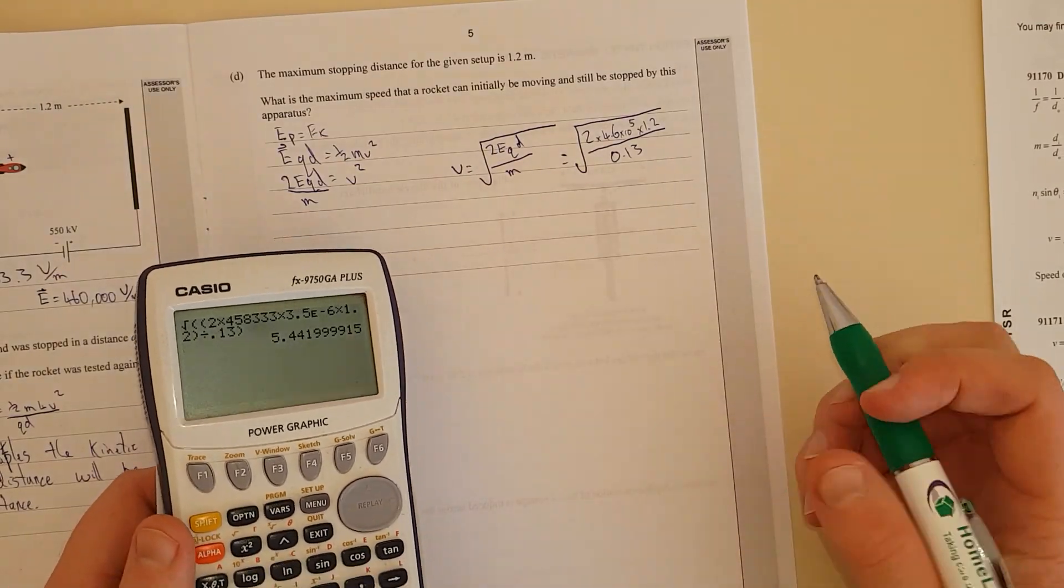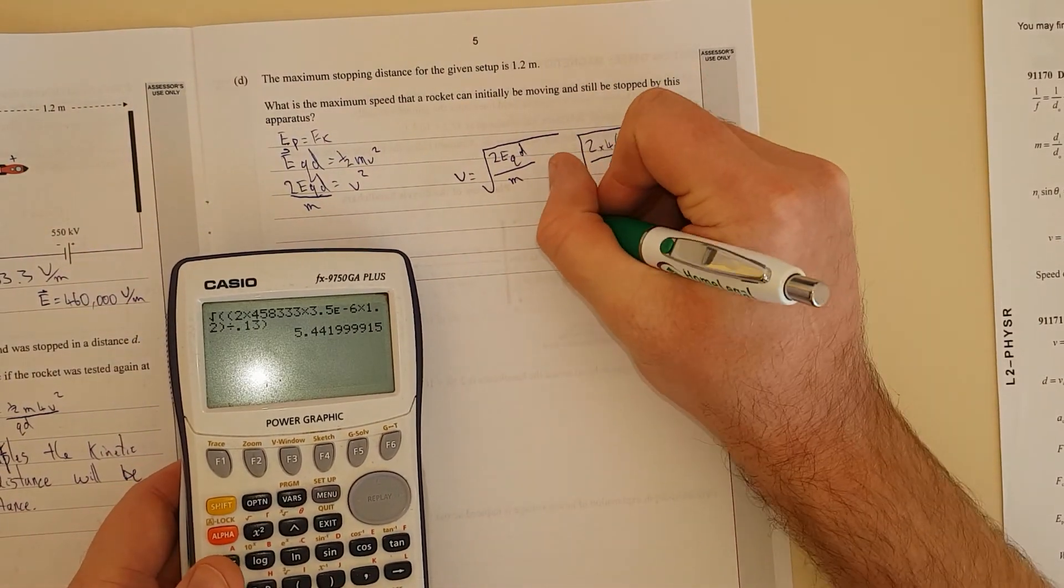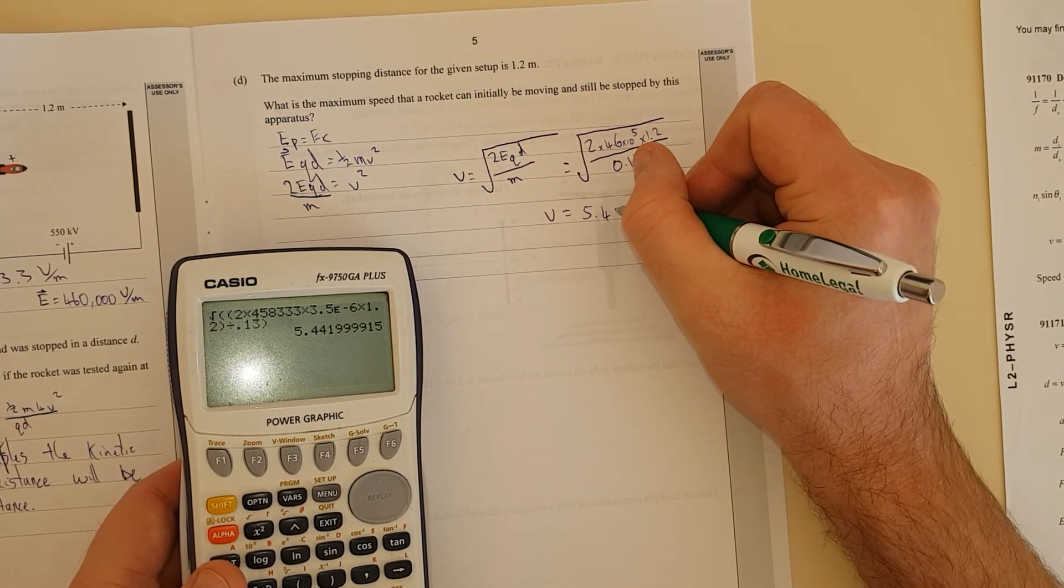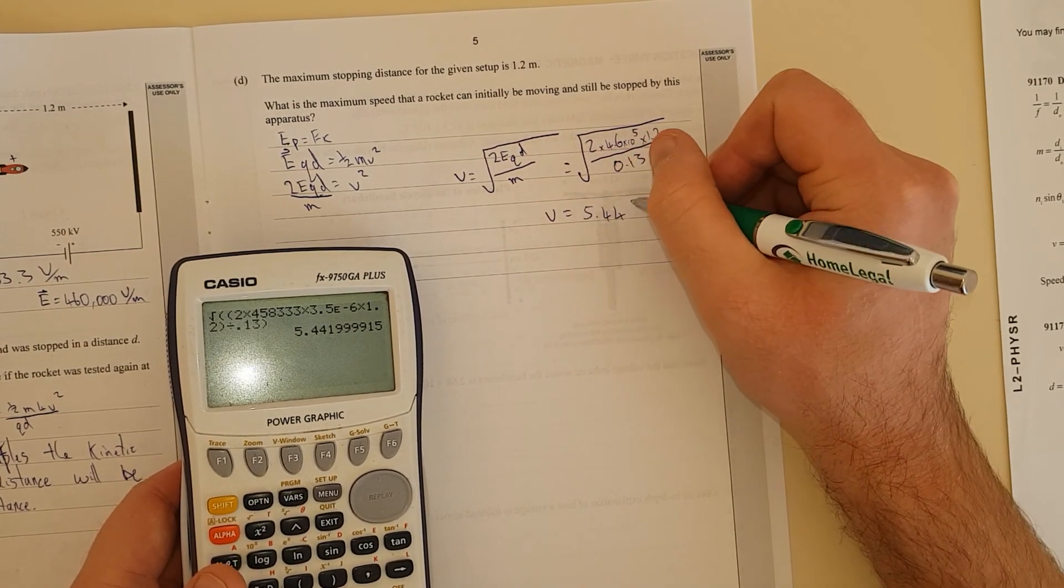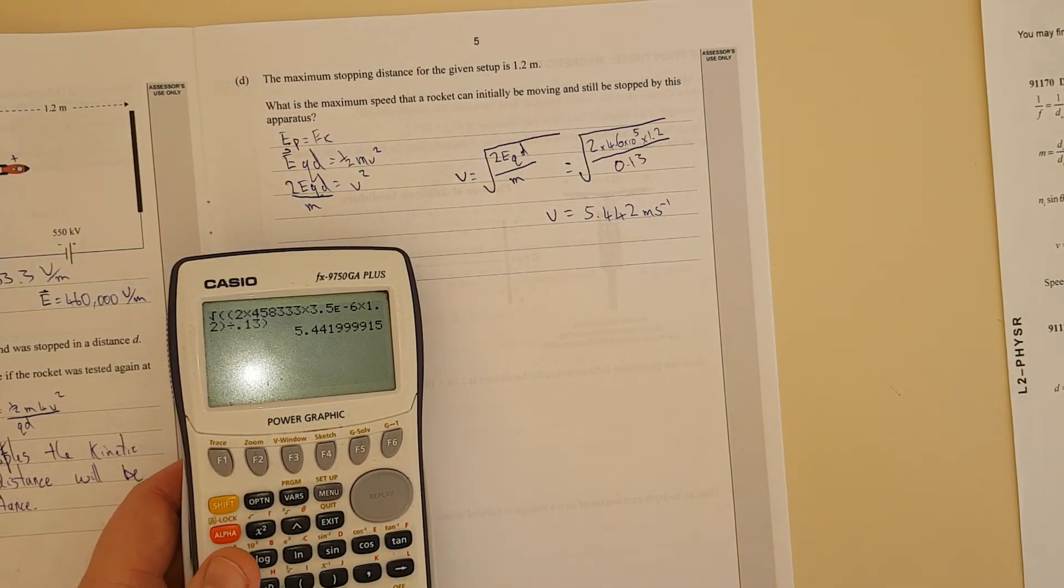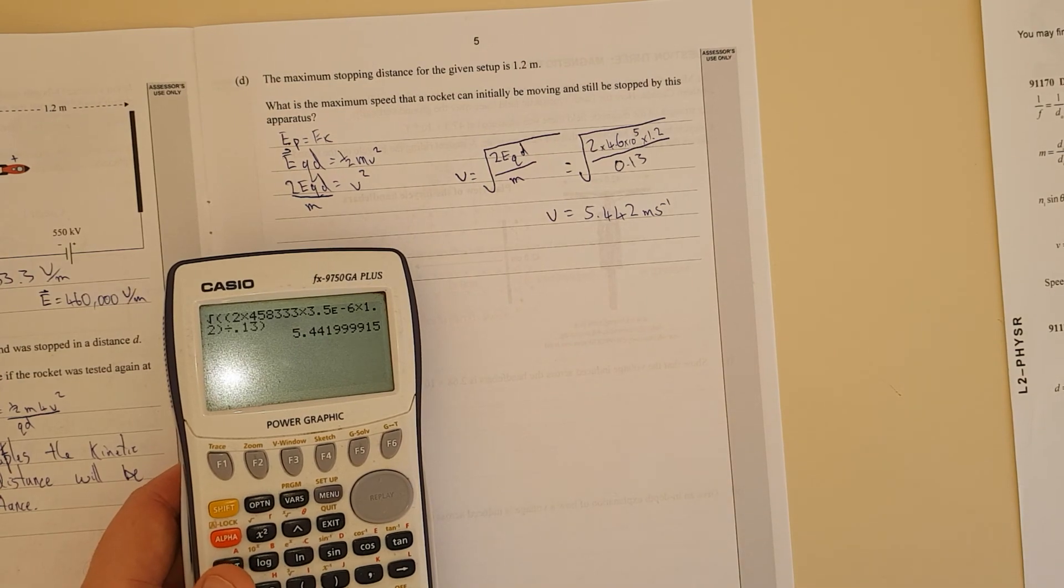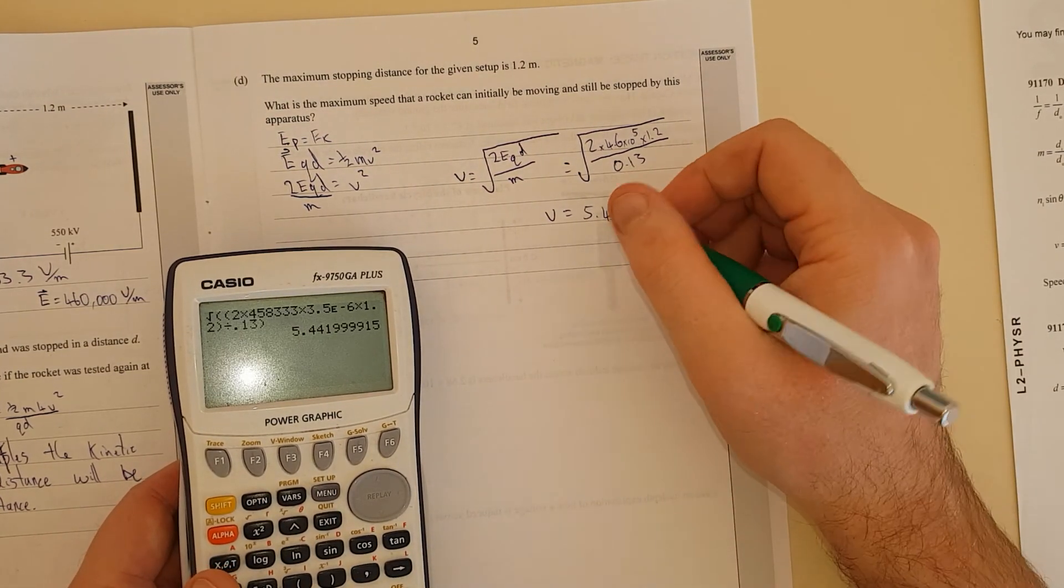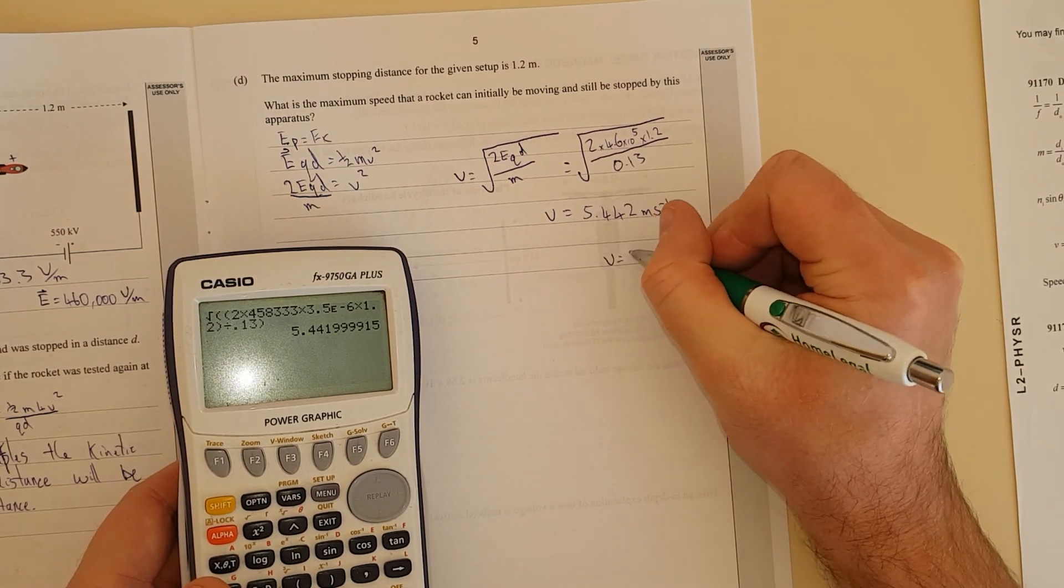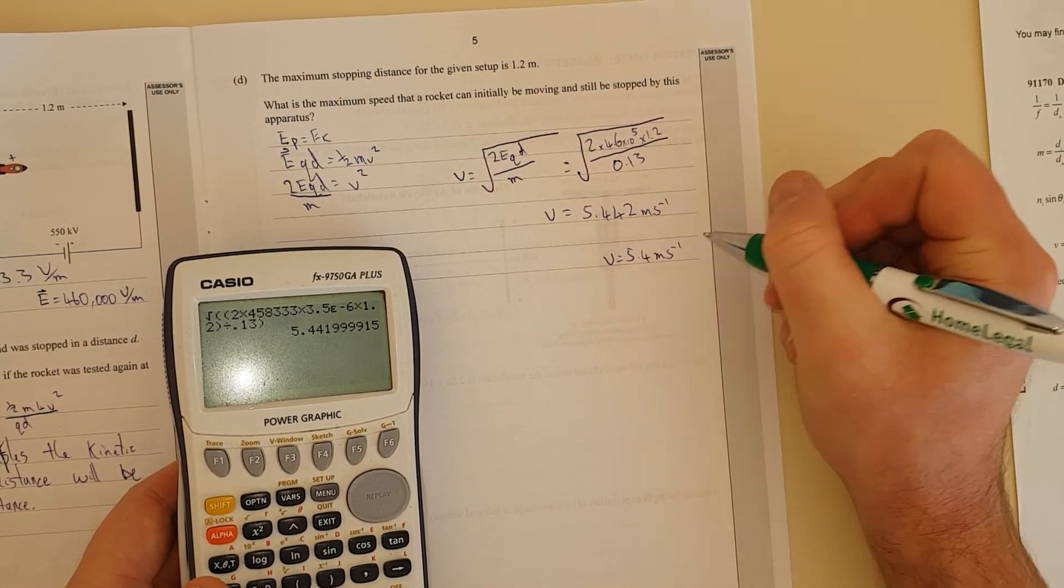So V equals 5.442 meters per second. And I've seen the answer schedule, and I've rounded to 5.45, this is close enough. So I'm going to round this to V equals 5.4 meters per second.